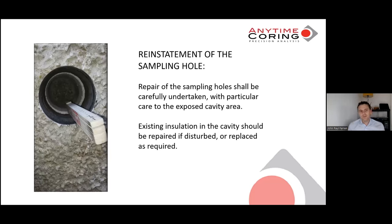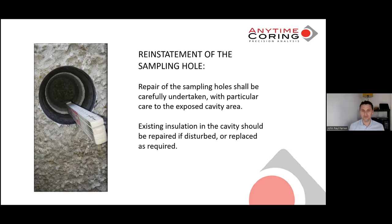Here we have an example of where we have extracted an external sample — gone right through and taken the insulation as well. We take great care in extracting the insulation from the core sleeve because it is usually a perfect fit to go back in. We've gone right through and taken the internal sample there as well. On this occasion we haven't broken the skin on the inside, so everyone's happy. It's also very important when reinstating the hole that we reinstate it as we found it and do not create a bridge across the cavity — particular care and attention should be taken to this, for obvious reasons.